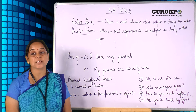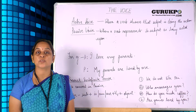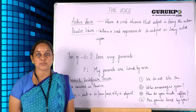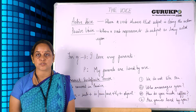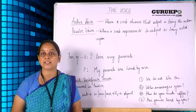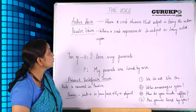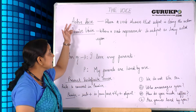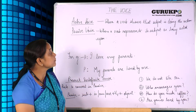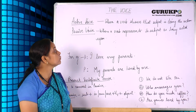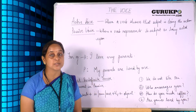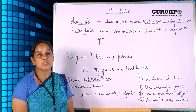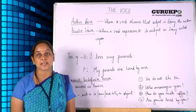What is voice actually? Voice is that quality of the verb that tells whether the doer is doing the action or experiencing the action. We have two types of voice: active voice and passive voice. Active voice tells us that the subject is doing the action, and passive voice shows that the subject is experiencing the action.